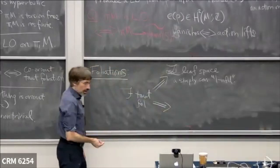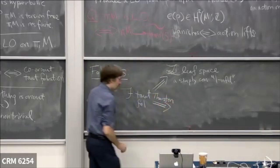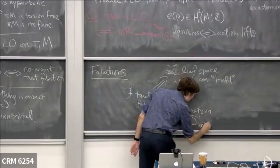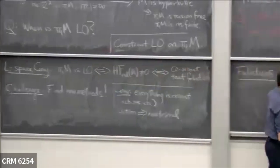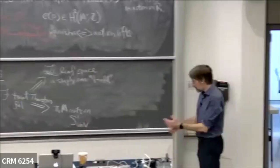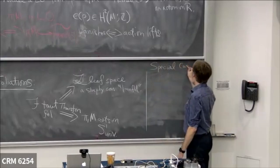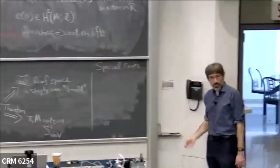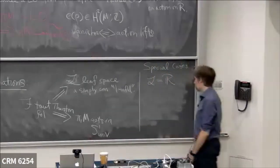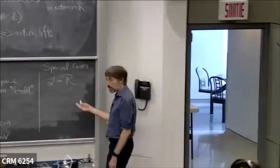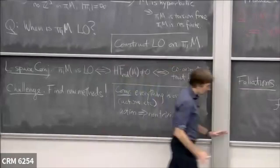The other way you get an action on a one-manifold is Thurston's universal circle: an action gotten by assembling the universal circles of the leaves, each carrying a hyperbolic metric. Neither of these actions is quite what we want. In some special cases you can promote them to a left order. For example, if the leaf space happens to be the real numbers — called an R-covered foliation — that works, though there aren't many good ways to build R-covered foliations combinatorially.